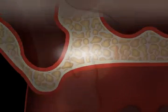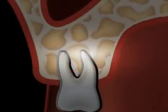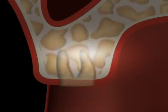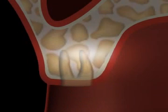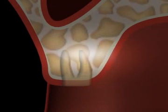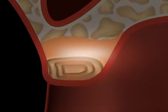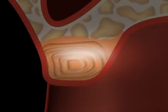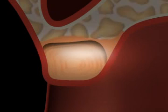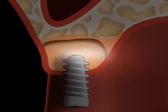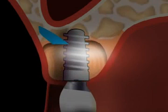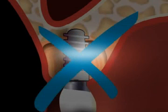Sometimes, a so-called flabby ridge forms. This is an alveolar ridge consisting of connective tissue, usually observed when the osseous alveolar ridge regresses at a very quick rate, for example due to an ill-fitting dental prosthesis. In such cases, often a fibrous ridge remains, which is unfortunately not suitable for an implantation.